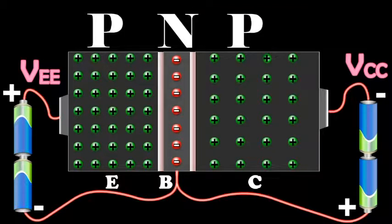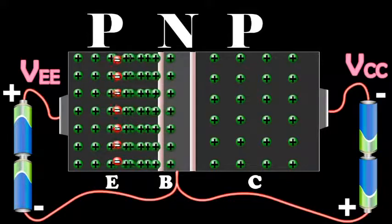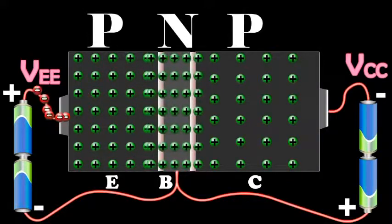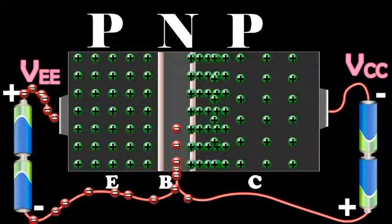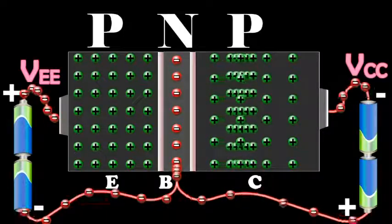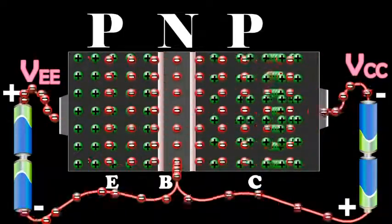Since the emitter-base junction is forward biased, a large number of holes cross the junction and enter the base. At the same time, very few electrons flow from the base to the emitter.